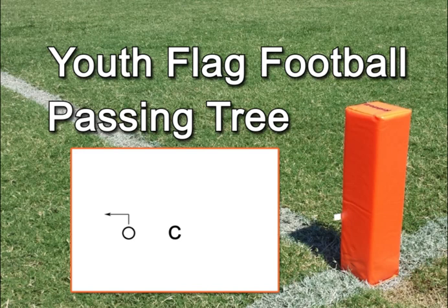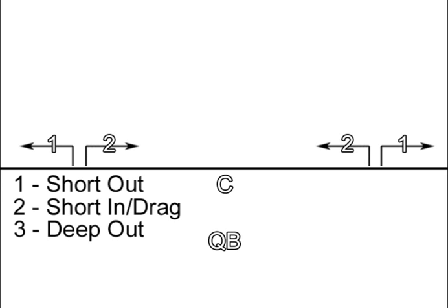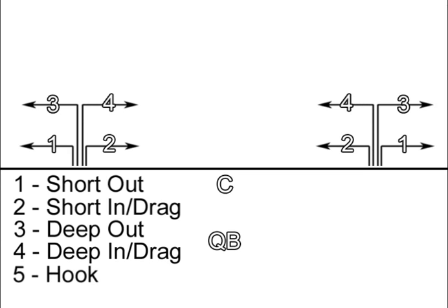So here's a quick breakdown of each route. The one is a short out, two is a short in or drag, three is a deep out, four is a deep in or drag, five is a hook.